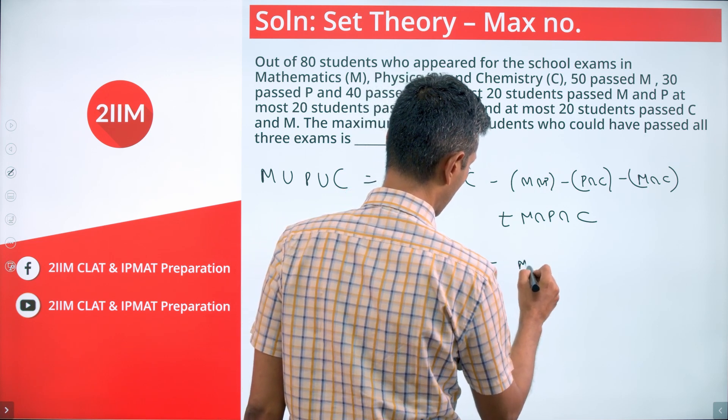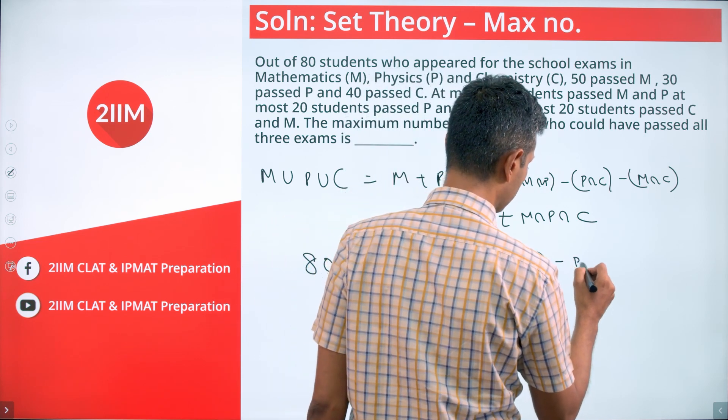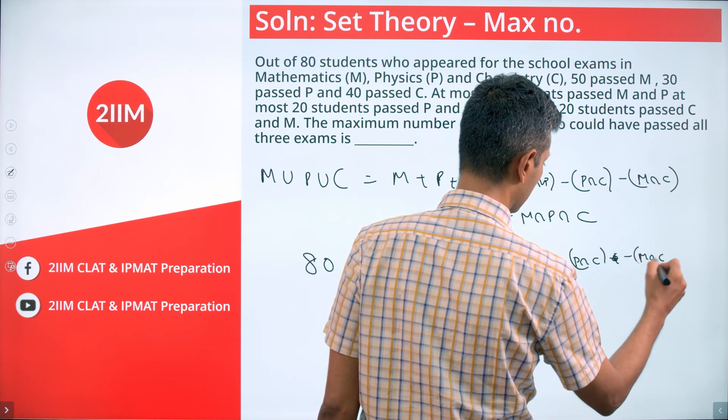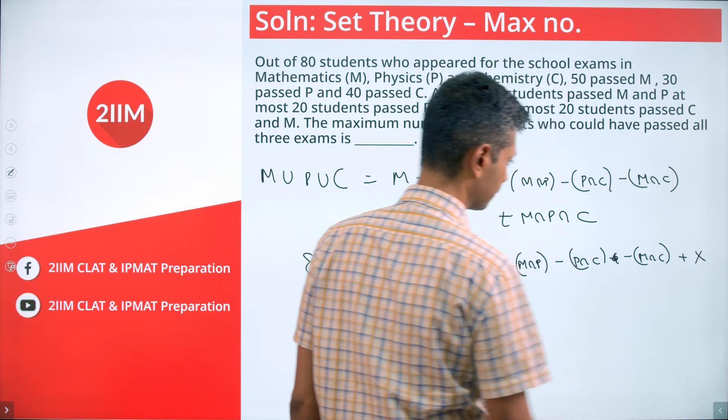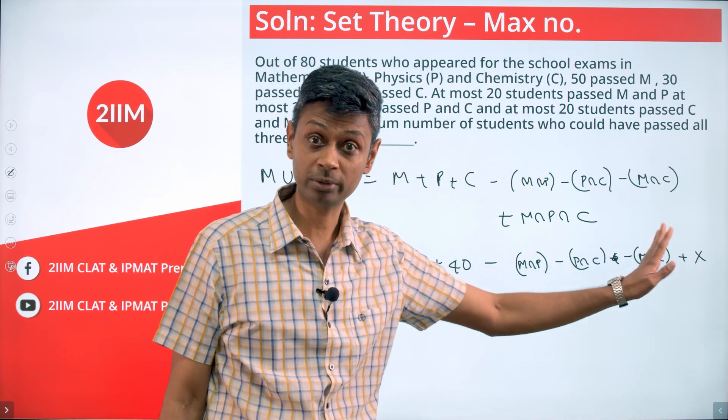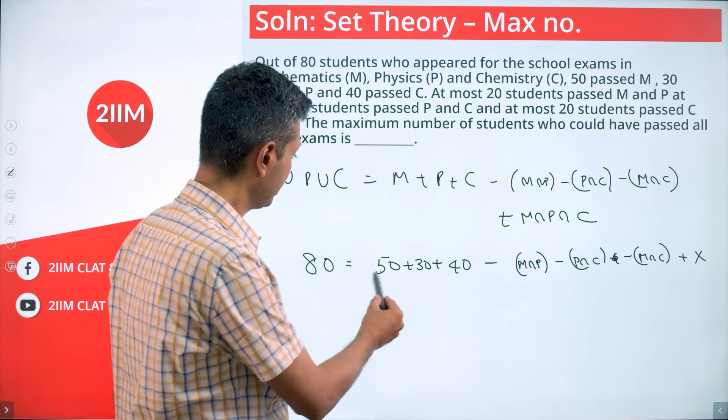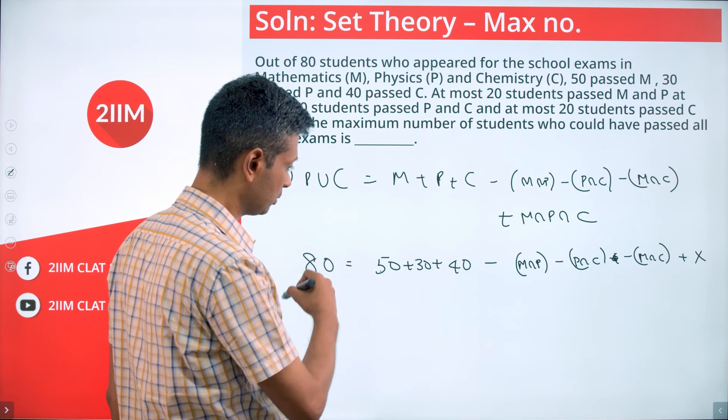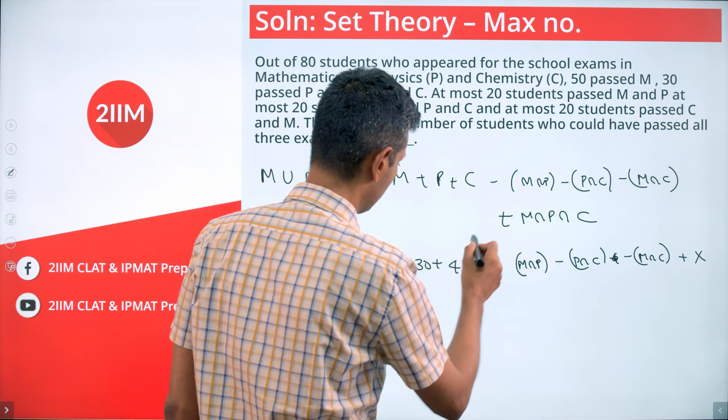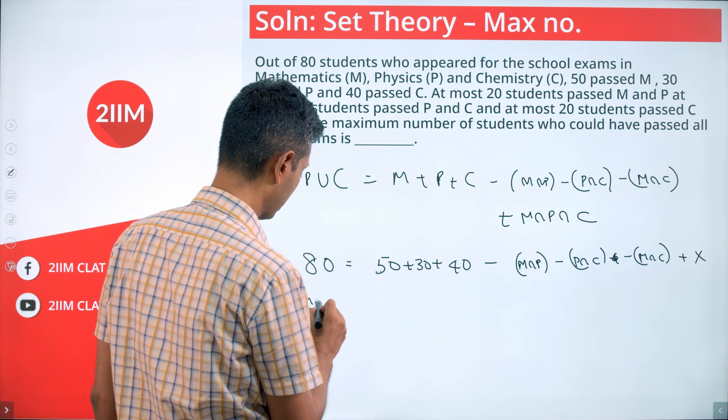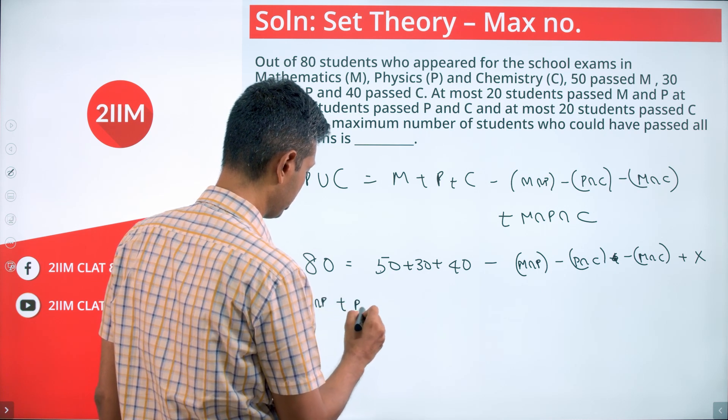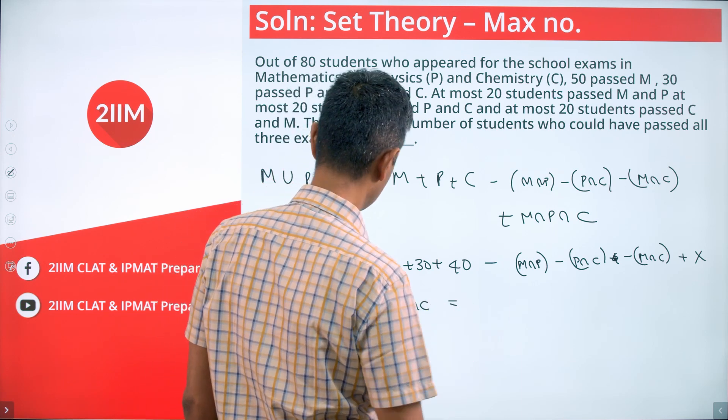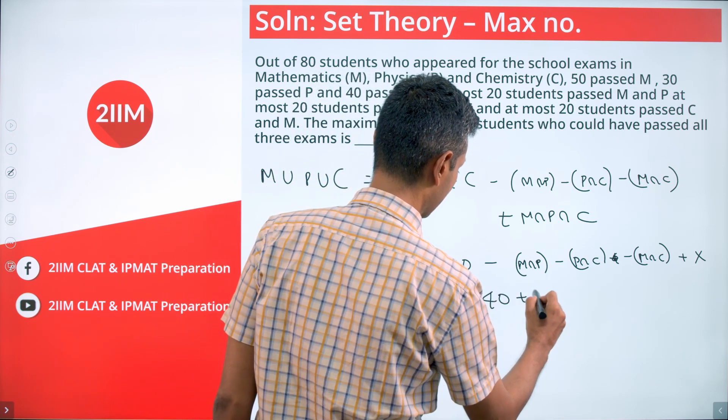Minus M intersection C plus x. We want to have x as high as possible—that's our objective point. So we want to find the maximum possible. 50 plus 30 is 80, plus 40 is 120. This side is 80. Bring the whole thing to this side: M intersection P plus P intersection C plus M intersection C equals 40 plus x.